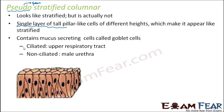Pseudo stratified columnar epithelium contains mucus-secreting cells called goblet cells. It can be ciliated or non-ciliated. The ciliated ones are found in the upper respiratory tract and the non-ciliated ones are generally seen in the male urethra.